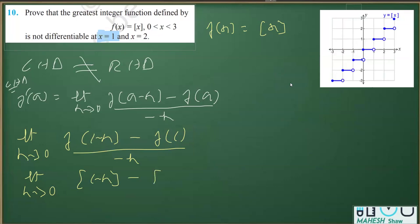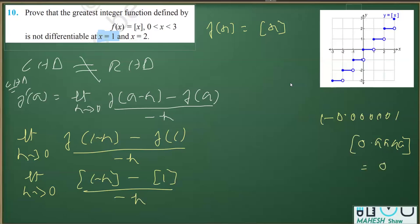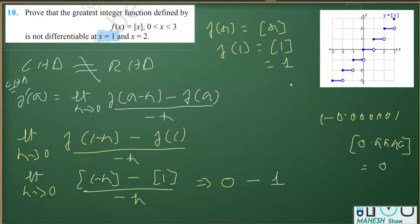Now, if from 1 we subtract a very small value, we get 0.9999..., whose greatest integer function is 0, not 1. So ⌊1 - h⌋ = 0. And ⌊1⌋ = 1. Therefore LHD = (0 - 1) / (-h) = -1 / (-h) = 1/h, which equals positive infinity.